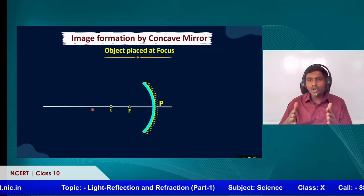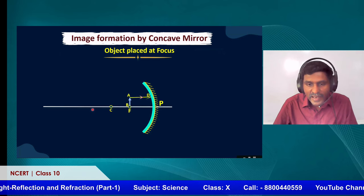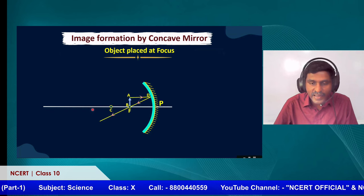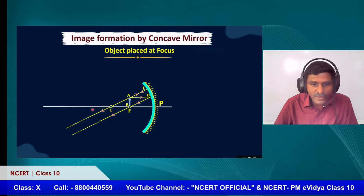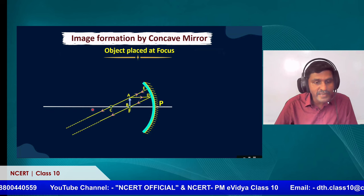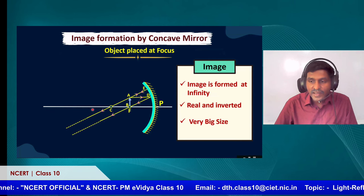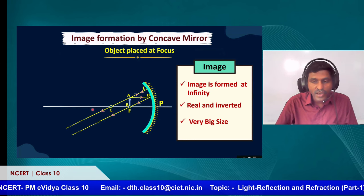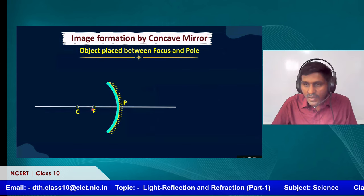When the object is placed at the focus F, one line is parallel and passes through the principal focus; the second line reflects at point E and comes back through C. These two lines never meet — they will only meet at infinity. So the nature of the image is: image is formed at infinity, real and inverted, and of very large size.